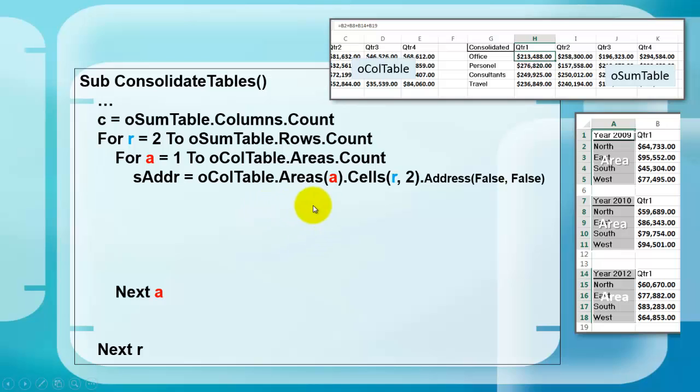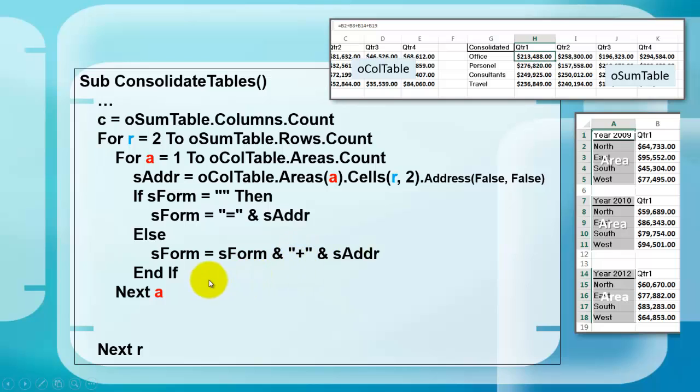And we store from the first area, the cell in row 2 through 5, the address in a relative notation. And we store that in S address. We store those addresses in a string formula. If there is nothing yet in S form. If there is nothing yet in S form, then we add the equal sign and the address of the cell. Let's say B2. Or if we have that already, then we say B2 plus B7 etc.